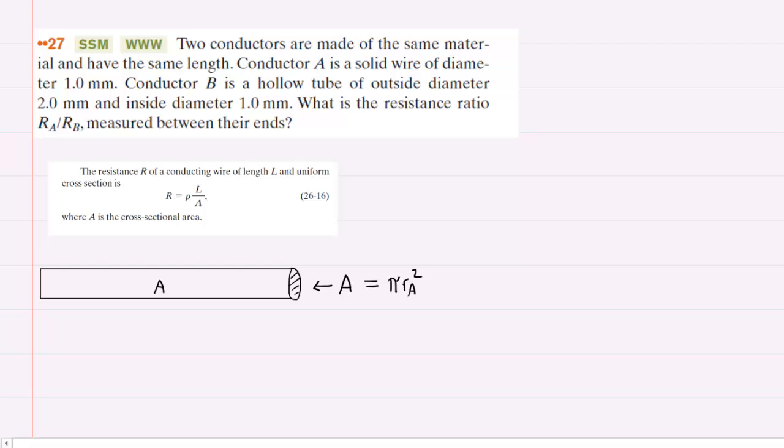We know that the resistance R of a conducting wire of length L and uniform cross-section is given by this equation. The resistance equals the resistivity, which is a value based on what the wire is made from, times the wire's length divided by the wire's cross-sectional area. Now, in most cases, for the cross-sectional area, we can use pi times radius squared because the wire is assumed to be an elongated cylinder. And of course, the cross-sectional area of a cylinder is the area of a circle.